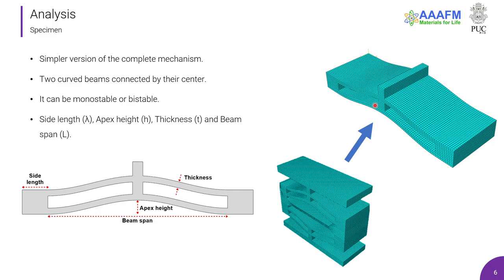The mechanism can be monostable or bistable, depending on the parameters. The parameters that I'll talk about here are the side length, thickness of the curved beam, beam span, which is the length here, and the apex height.